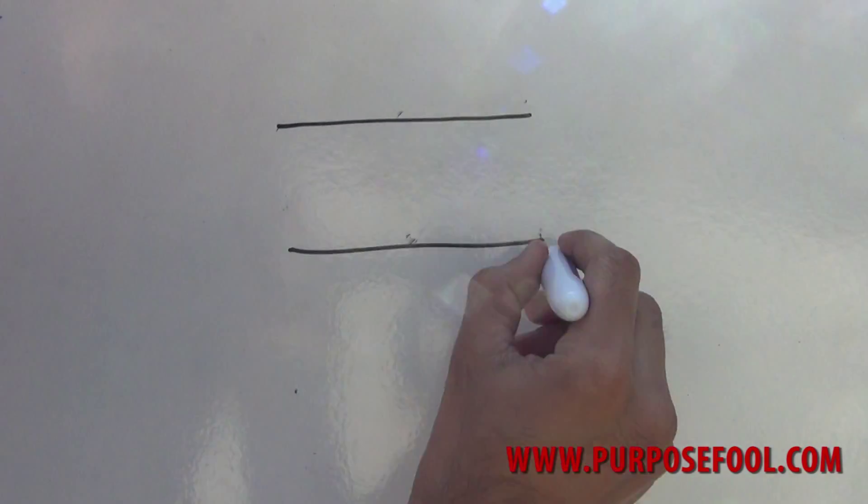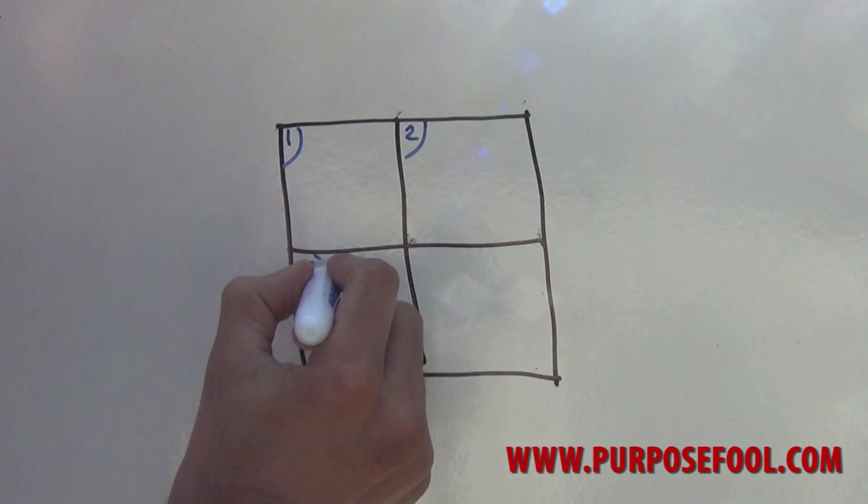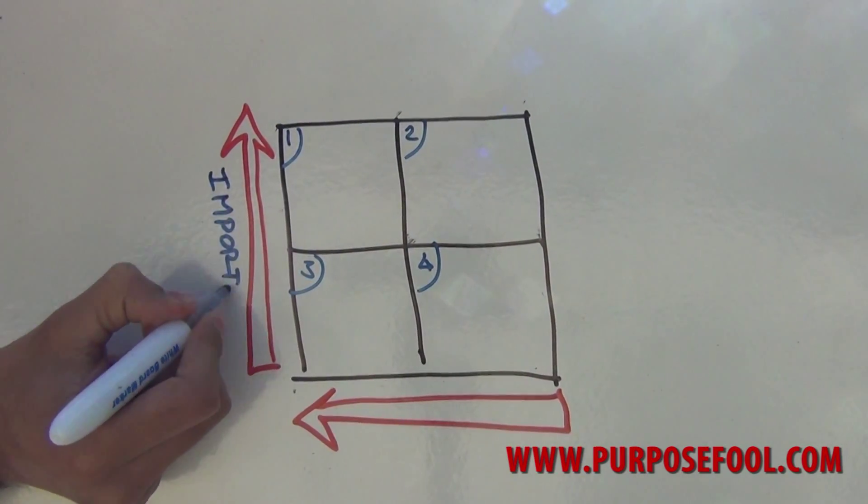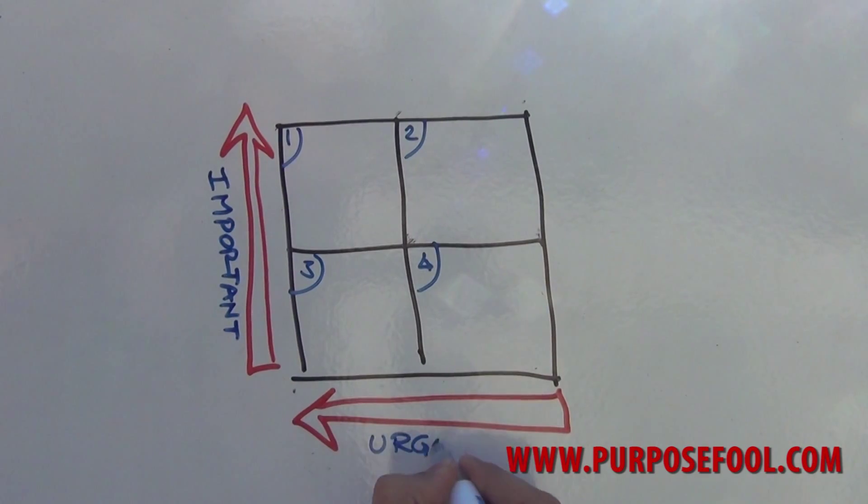It was developed by American President Dwight Eisenhower who used it to prioritize his day and make productive use of his time. The Eisenhower Matrix is made up of four quadrants or squares, which increase in importance as we go up the matrix and increase in urgency as we move across it from right to left.